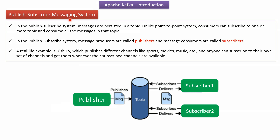Now we will see the publish-subscribe messaging system. Here you can see the topic, the publisher, and subscriber 1 and subscriber 2. Both subscribers subscribe to the topic. When the publisher publishes a message to the topic, the same message will be delivered to subscriber 1 and subscriber 2. In the publish-subscribe system, messages are persisted in a topic, and unlike the point-to-point system, consumers can subscribe to one or more topics and consume all the messages in the topic.